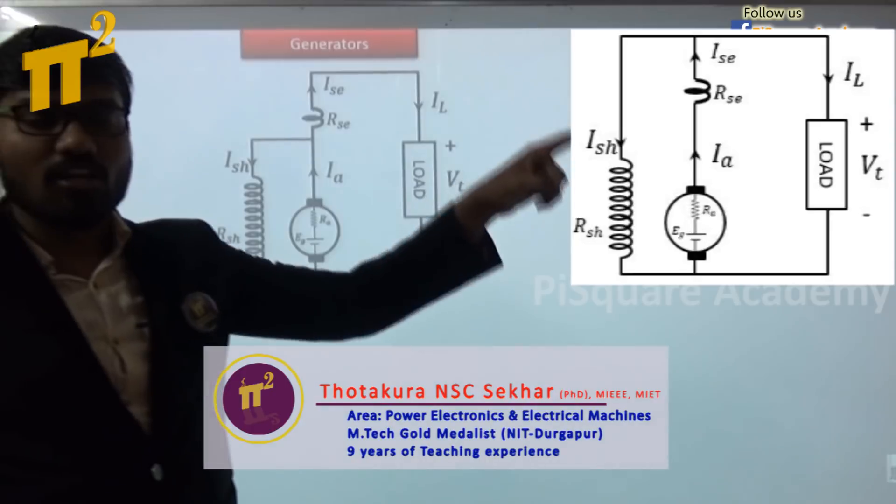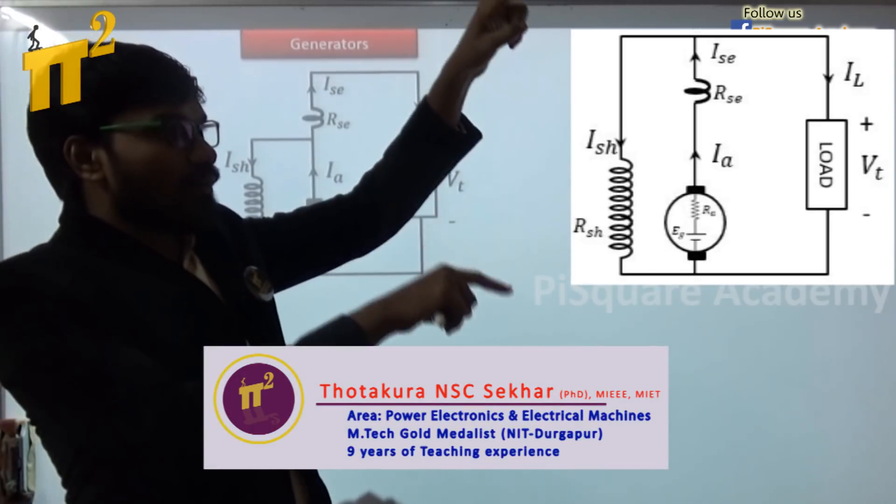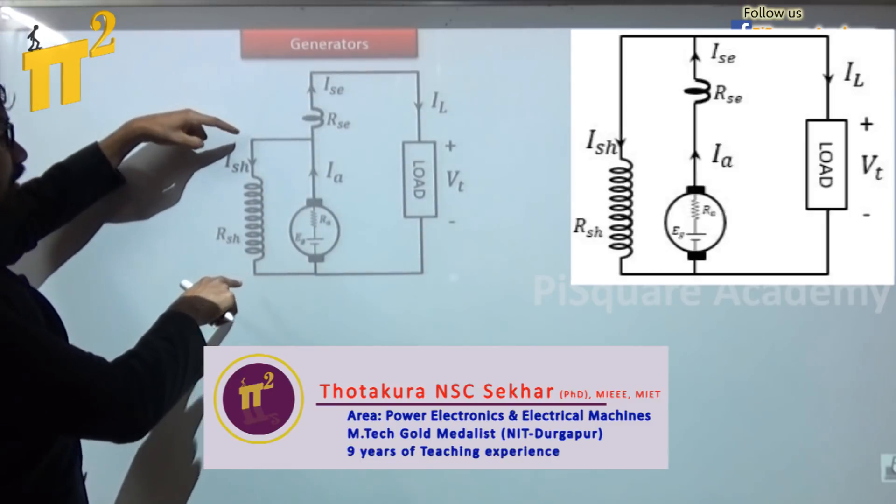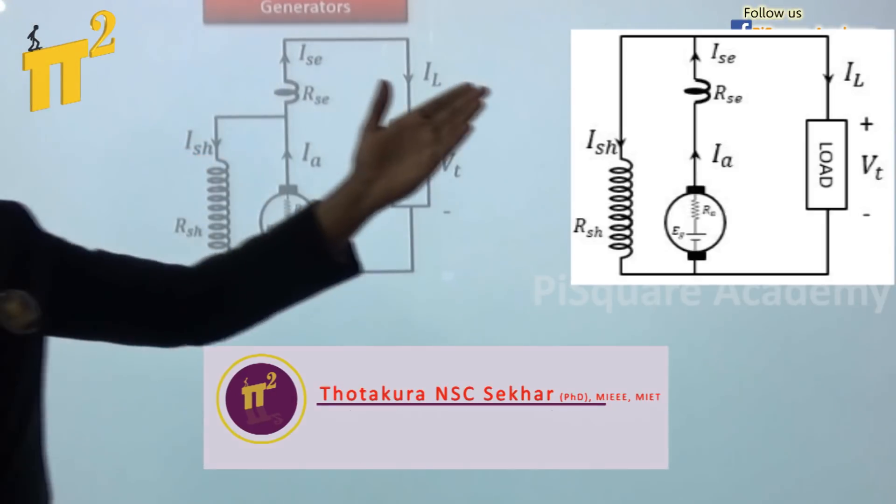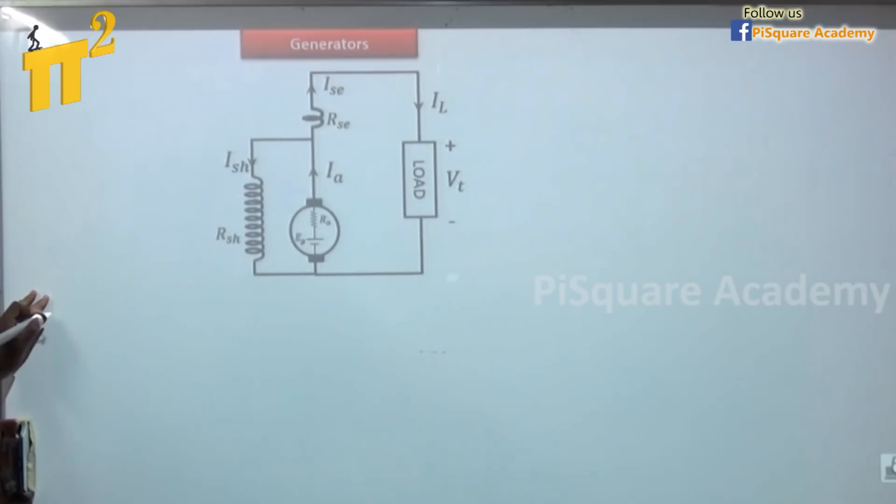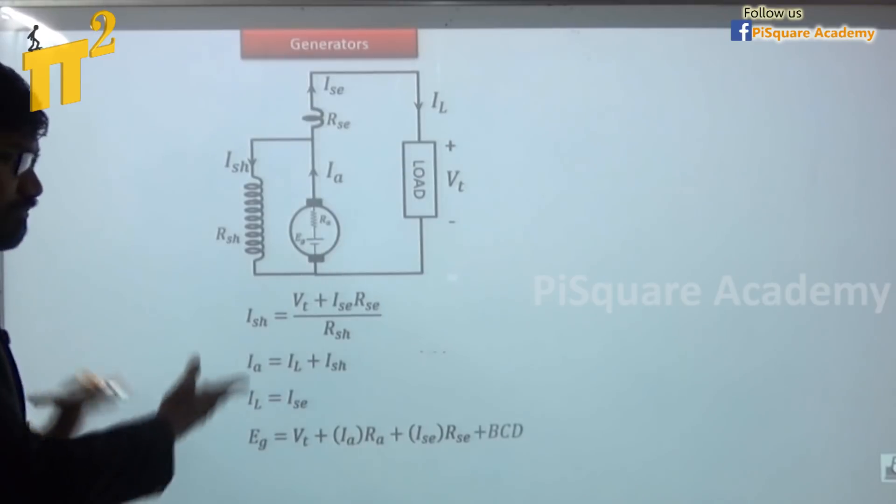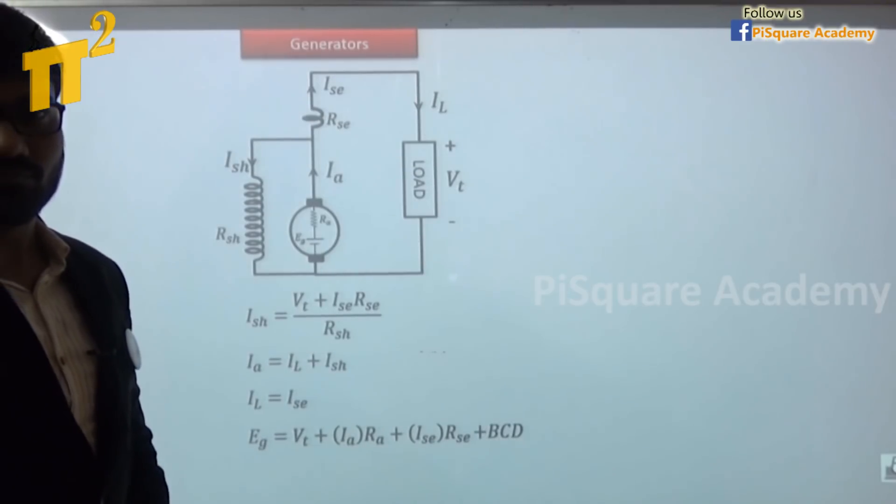But it is named as short shunt compound generator, and this one is named as long shunt compound generator. Because of the reason, here shunt winding is connected little longer, but in this case shunt winding is connected little shorter. Hence, short shunt compound and this one is long shunt compound. Corresponding voltage and current equations are as follows. They are simple network issues. You can simply understand these things.